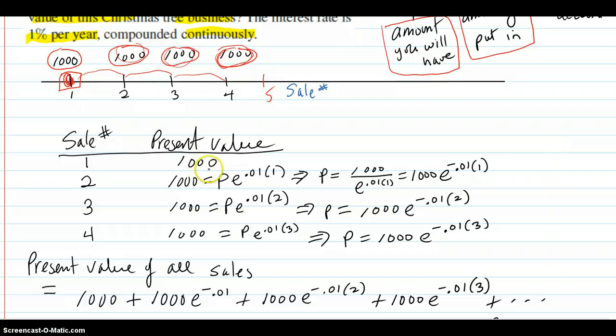At sale number one, that's now. So your $1,000 you're going to get is a present value right now.